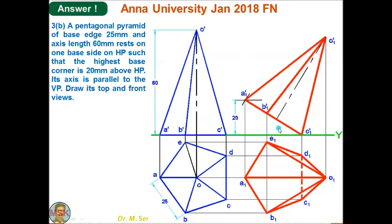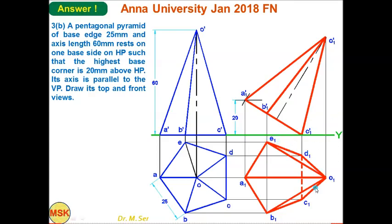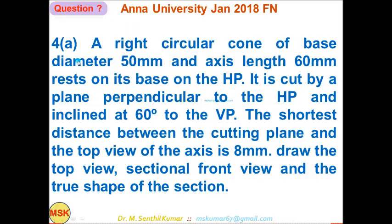Draw the line from C1-dash through A1-dash as the base in the final front view, then complete the entire final front view. Draw projectors and horizontal lines to get the points for the final top view. For this observer, edge CD is hidden; all other edges are visible. That is the answer for question 3B.